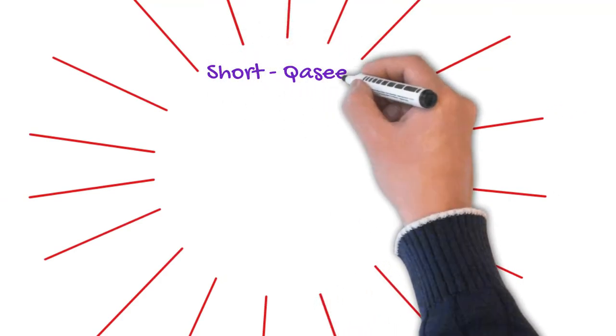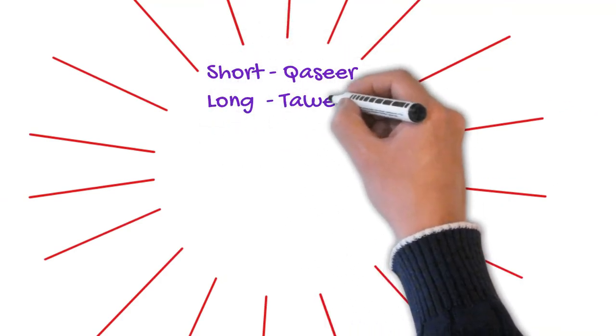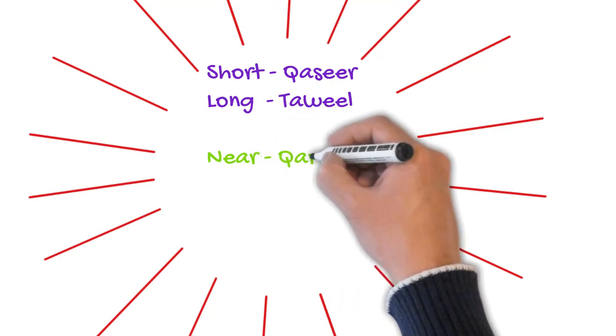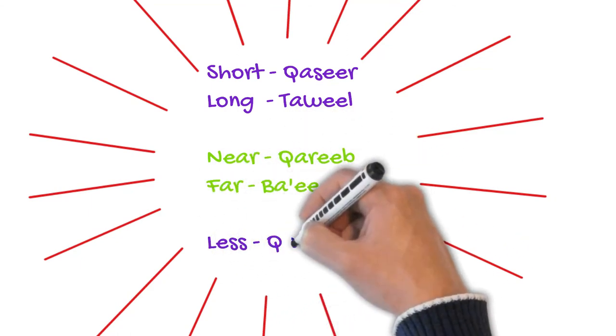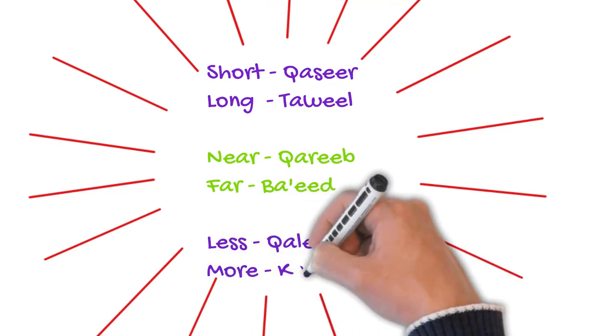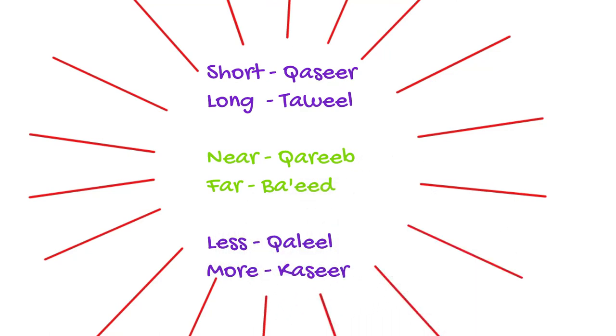Quick recap. Short, kasir. Long, tawil. Near, karib. Far, ba'id. Less, kalil. More, kasir.